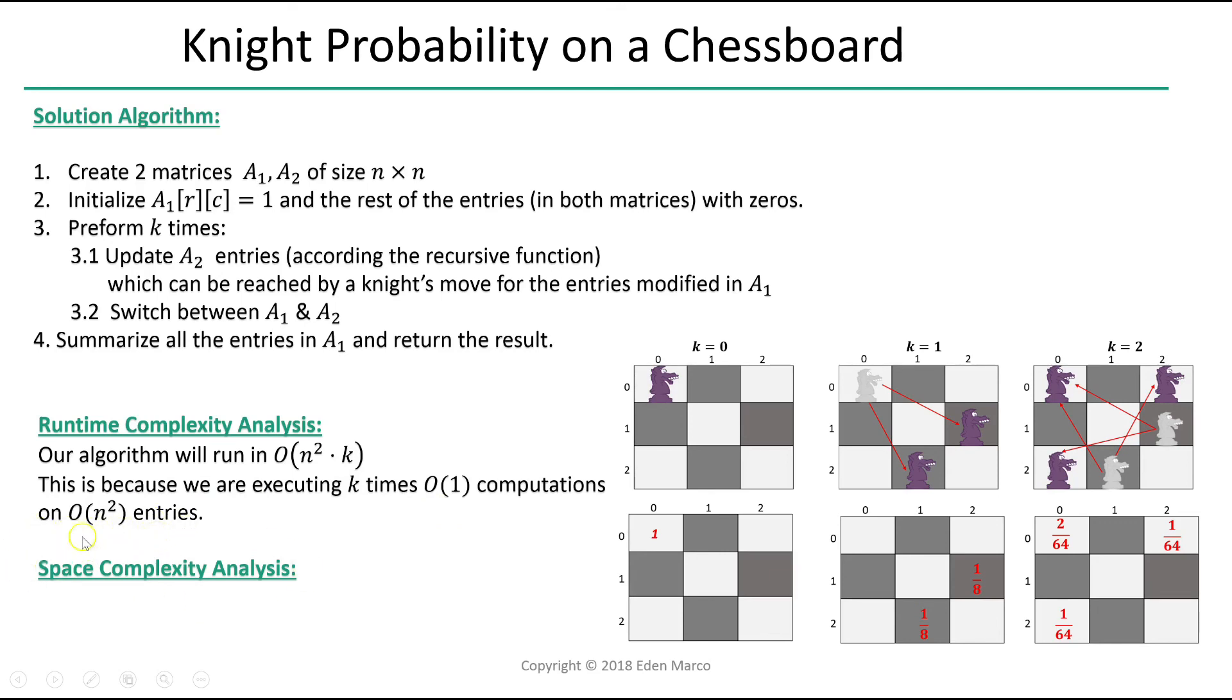When analyzing space complexity, because we allocate only two matrices of size n by n, this is going to cost us big O of n squared.